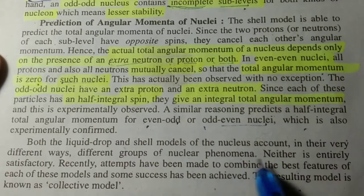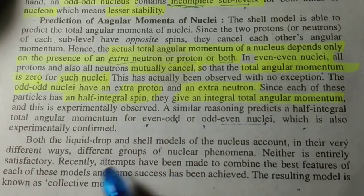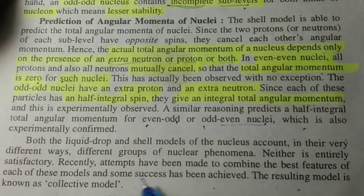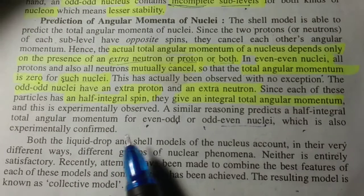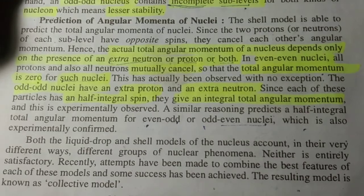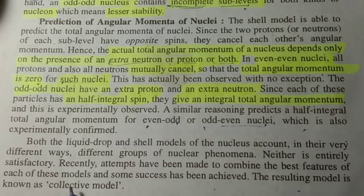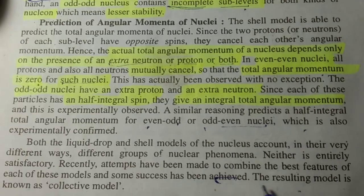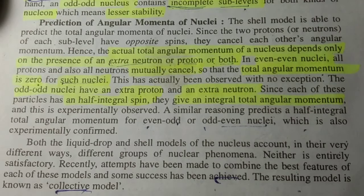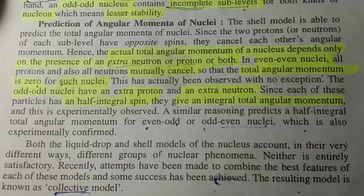Both the liquid drop and shell models of the nucleus account, in their very different ways, for different groups of nuclear phenomena. Neither is entirely satisfactory. Recently, attempts have been made to combine the best features of these models, and some success has been achieved. The resulting model is known as the collective model, which is also very important and which I will discuss in the next video. So, till then, thanks for watching the video.